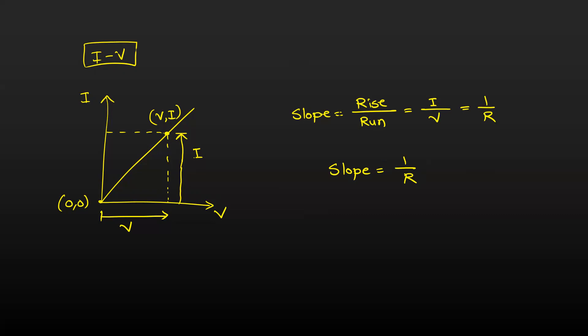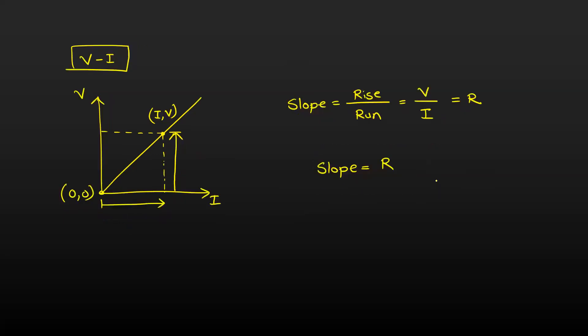I hope this is clear. You can plot both graphs. Just remember: if it is a current versus voltage graph, slope equals 1/R. If it is a voltage versus current graph, slope equals the resistance. That's it for today — thank you so much.